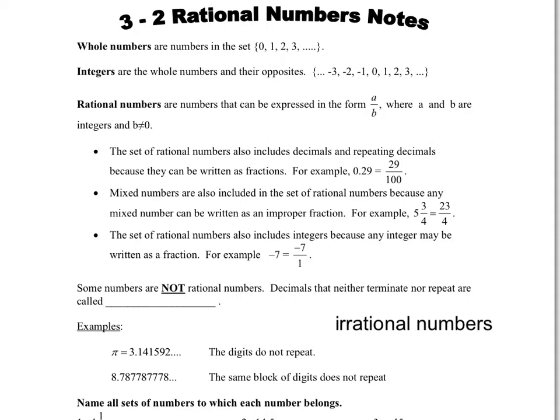Now when you first started learning numbers, back probably even before kindergarten, the first thing you started learning about was whole numbers. And whole numbers are the set of numbers where it starts with 0 and goes 1, 2, 3, and continues on forever. And it's whole numbers and it's all positives.